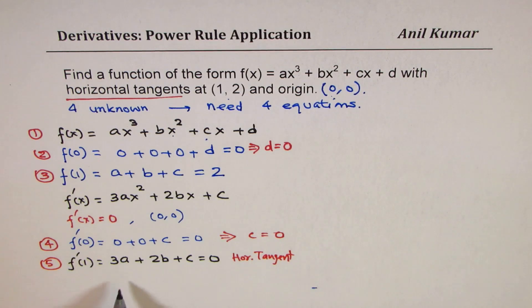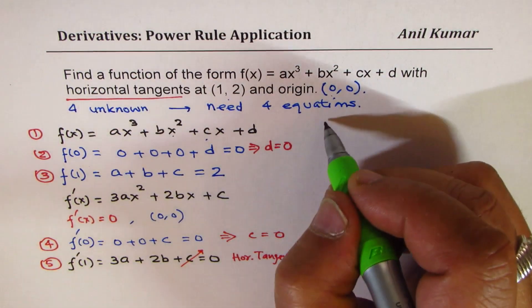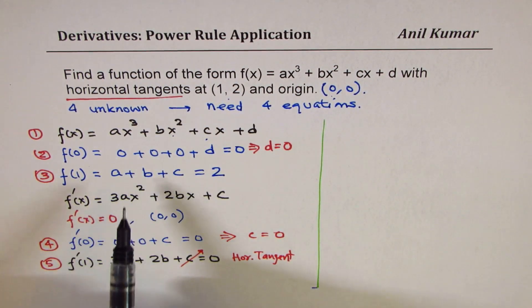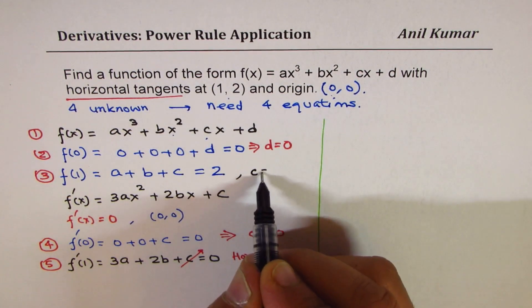So we get equation number 5. Now from here, we have three unknowns: 1, 2, and 3. In fact, c is 0, so that goes. So we have now two unknowns and two equations.